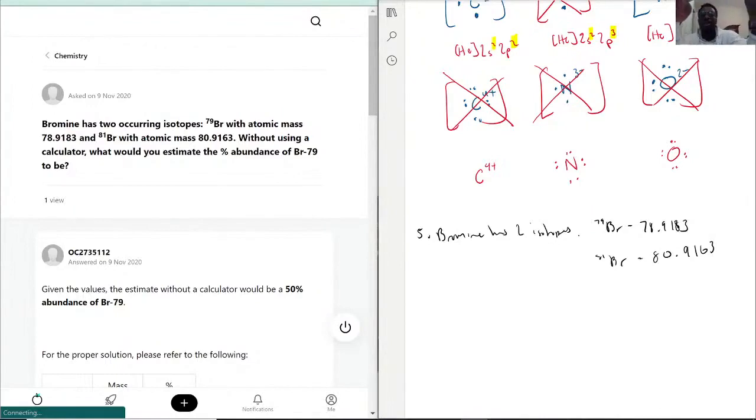And it's asking that without using a calculator, you want to be able to find the percent abundance of Br-79.